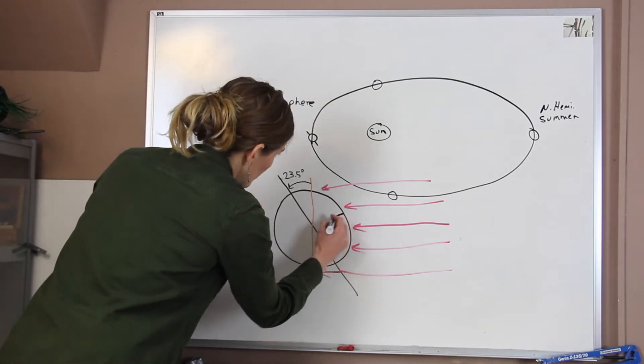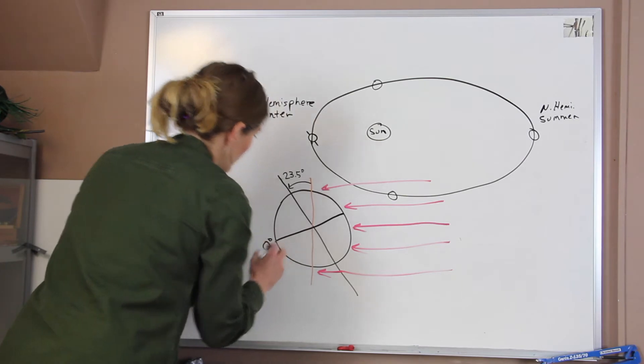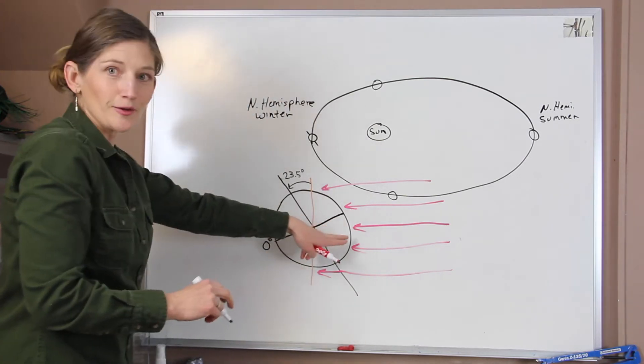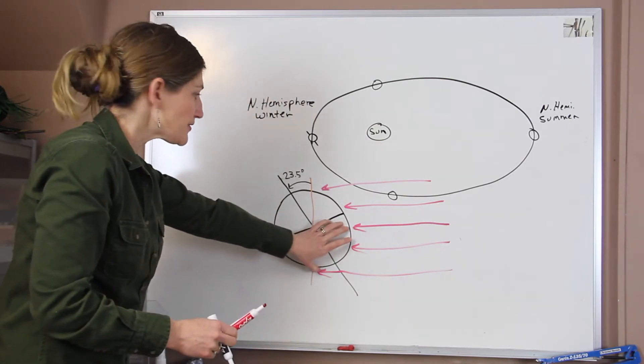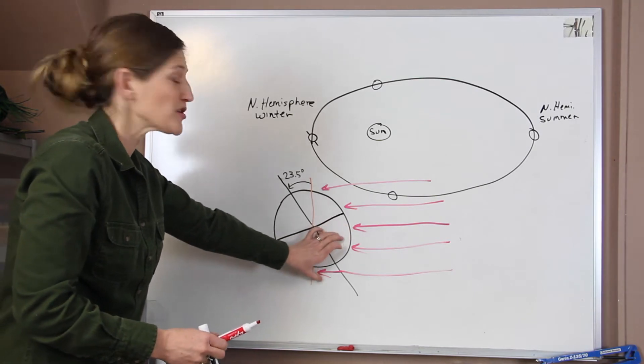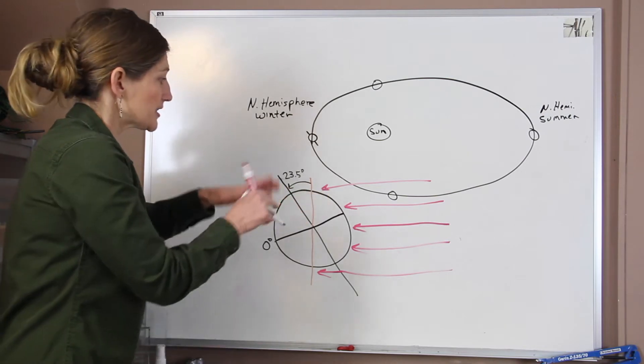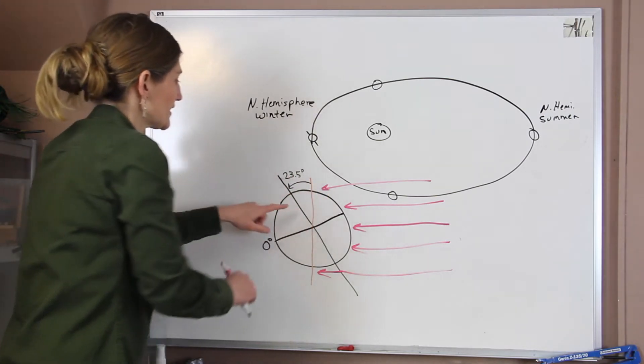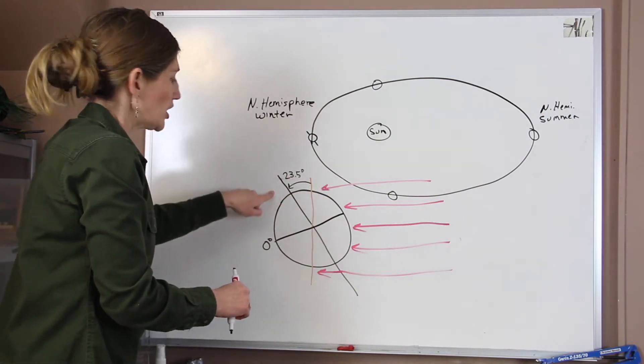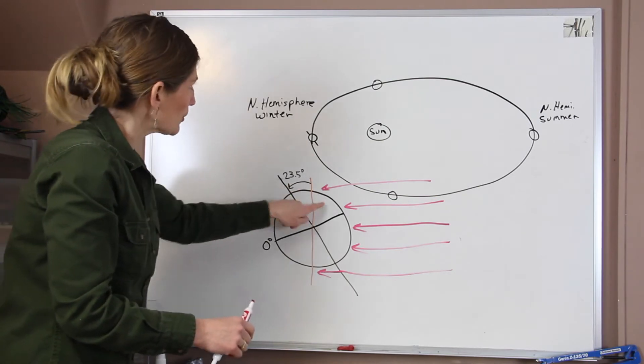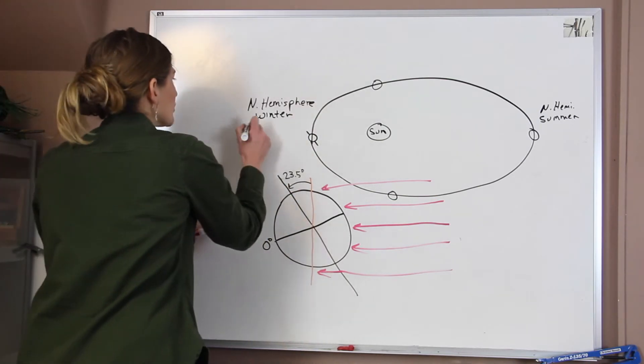And we find out that more of... Let's see, I'll draw our equator. Okay, we have more incoming solar radiation in the southern hemisphere. So this is their summertime. And in the northern hemisphere, we have less incoming solar radiation. It's spread out more over this surface. And we have longer nights and shorter days. So we have shorter days.